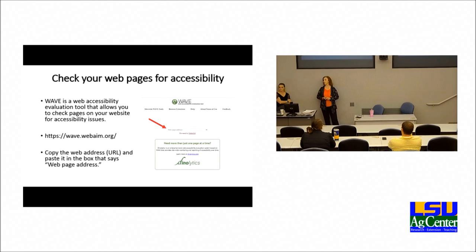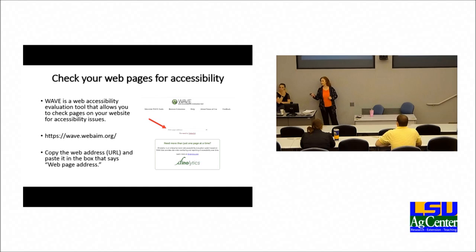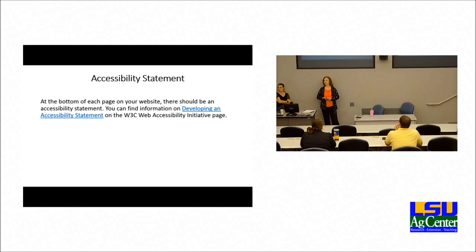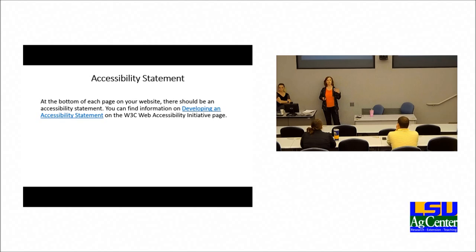There's a website called WAVE where you can check your web page to make sure it's accessible. You paste the web address into the box on the WAVE site and it will tell you the errors on the page you need to correct to make it accessible. At the bottom of each page on your website there should be an accessibility statement — your programmer can put that in the footer on each page. There's information on developing an accessibility statement and I have a link to that in the PowerPoint.